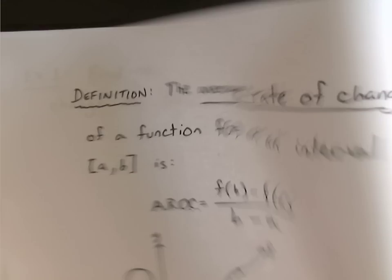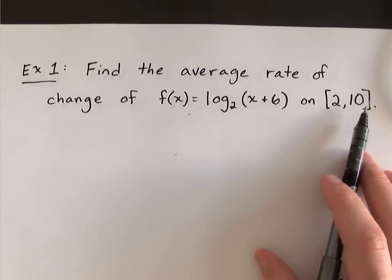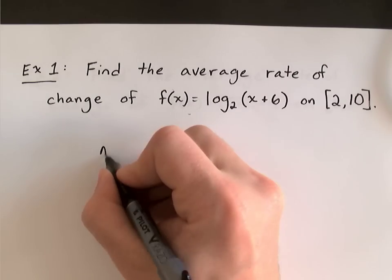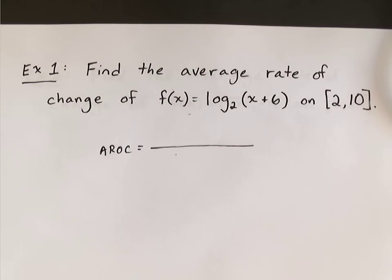Look at an example. Find the average rate of change of the function f(x) equals log base 2 of x plus 6 on the interval from 2 to 10. So you'll be given a function, you'll be given an interval. And in order to calculate its average rate of change, you just find the slope, change in y over change in x.